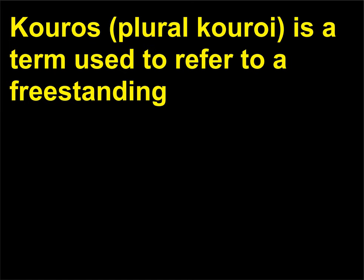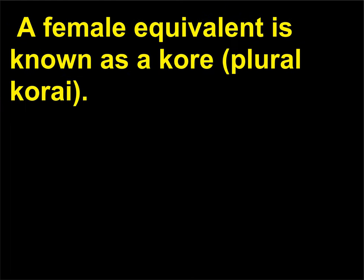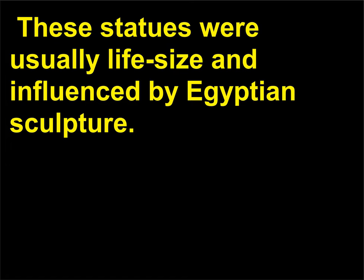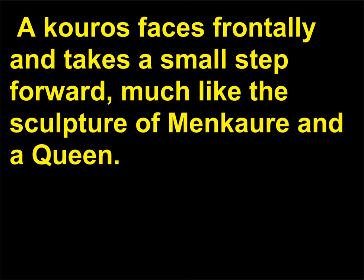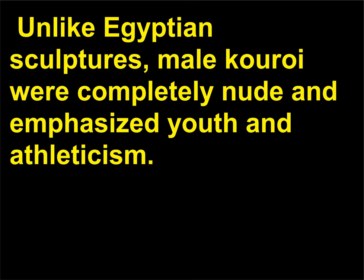What is a Kouros? Kouros (plural: Kouroi) is a term used to refer to a freestanding sculpture of a young male during the Archaic period of ancient Greek art. A female equivalent is known as a Kore (plural: Korai). These statues were usually life-size and influenced by Egyptian sculpture. A Kouros faces frontally and takes a small step forward, much like the sculpture of Menkaure and a queen. The arms are held firmly at the sides and the hair is formed in long rows of stylized braids. Unlike Egyptian sculptures, male Kouroi were completely nude and emphasized youth and athleticism.